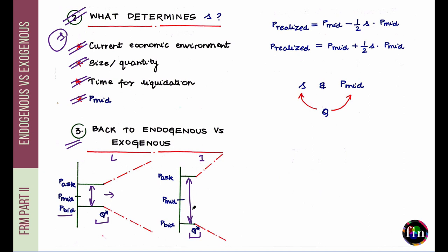For the illiquid asset, the region where the spread stays relatively constant is very short — a very small Q*. And as Q exceeds Q*, the curve is much steeper, meaning the market impact of larger-sized trades is much higher; prices increase or decrease much more rapidly.